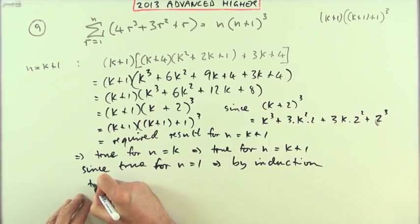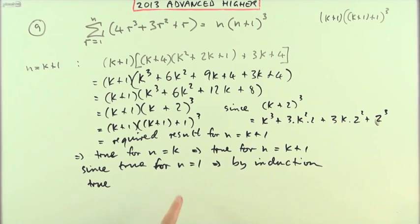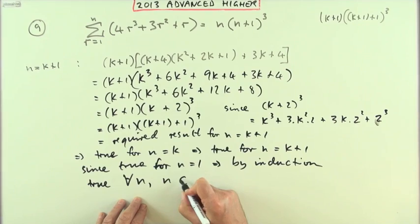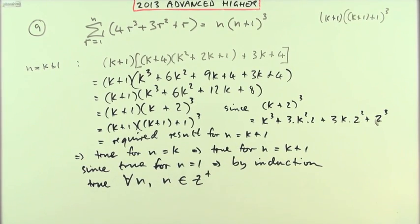It's going to be true thereafter. If it's true for 1, it's true for 2, and if it's true for 2, it's true for 3, and then it dominoes on. True for all n where n came from the positive integers.